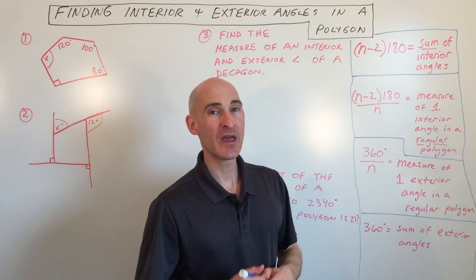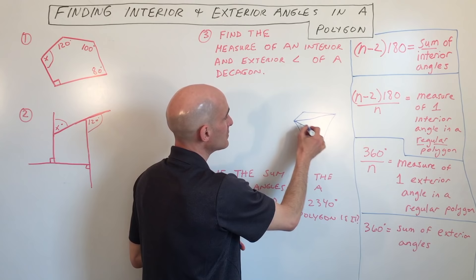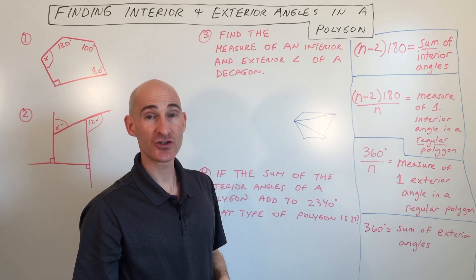So for example, you have a polygon like this. You can divide this into one, two, three triangles. And we know the sum of the measures of the angles in a triangle add up to 180.